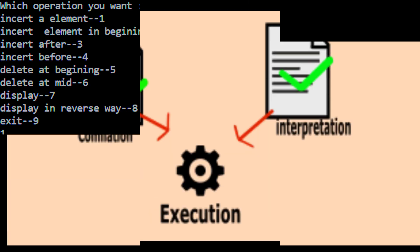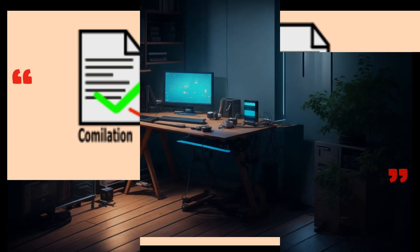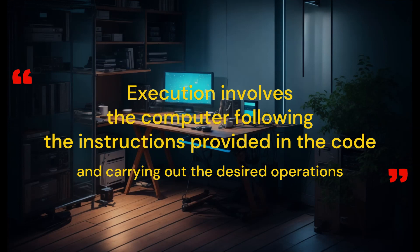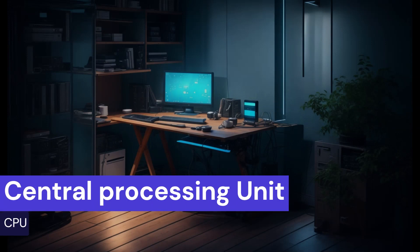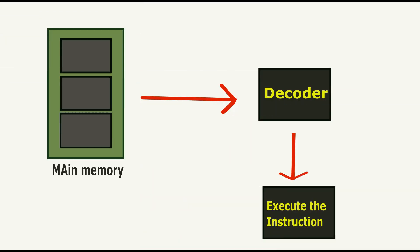Execution. Once the code has been compiled or interpreted, the computer is ready to execute it. Execution involves the computer following the instructions provided in the code and carrying out the desired operations. The computer's processor, also known as the central processing unit or CPU, plays a crucial role in executing the code. It fetches each instruction from memory, decodes it to understand what action needs to be performed, and then executes that action. This cycle repeats until the program is complete or encounters an instruction to terminate.